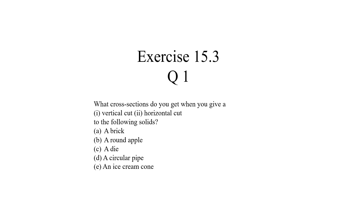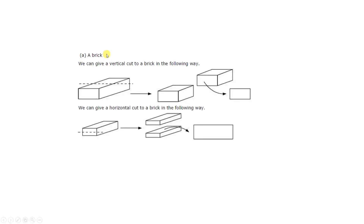Let us start solving question number one. Number one: a brick. We have to cut this brick vertically and horizontally and tell what cross section we are seeing. First, we give this brick a vertical cut — means this way. When we cut this brick, it divides in two parts and inside, that cross section looks like a rectangle. Now for the horizontal cut of the brick, it divides in two parts and inside that cross section also looks like a rectangle.